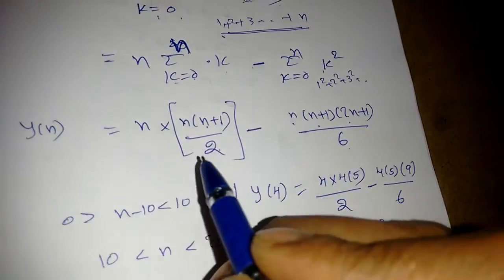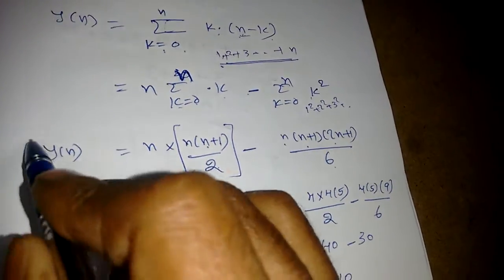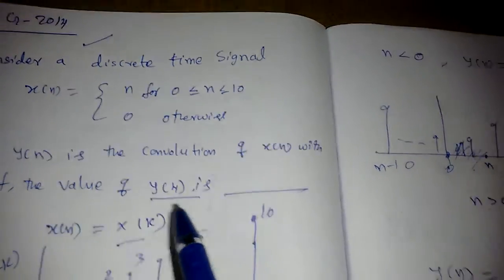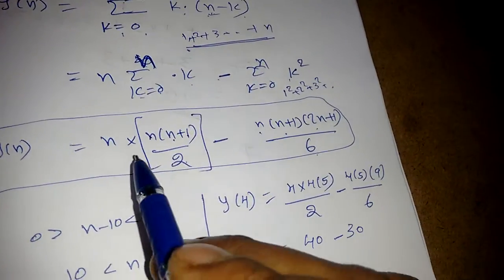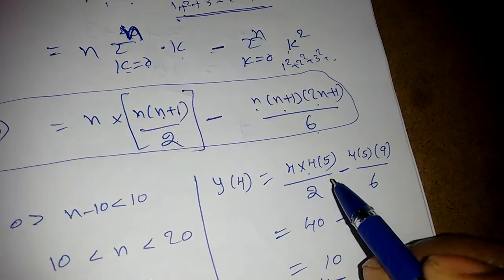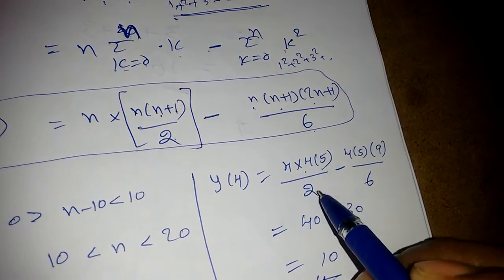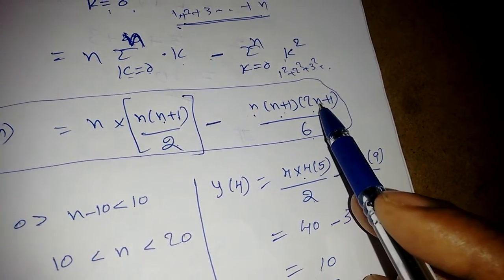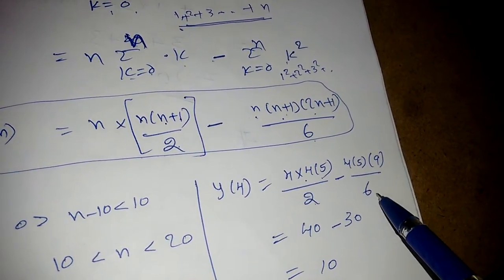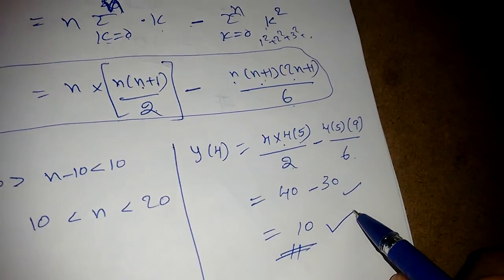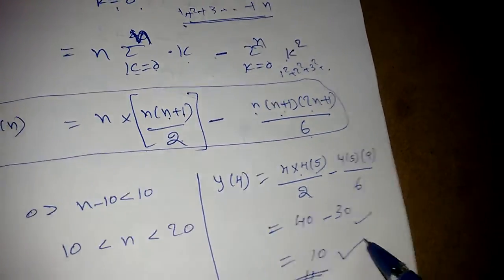Applying Σk² = n(n+1)(2n+1)/6, we get y[n] for 0 to 10. Substituting n=4: y[4] = 4·(4·5/2) - 4·5·9/6 = 40 - 30 = 10. So the answer is y[4] = 10.